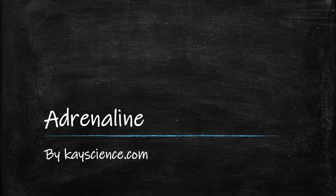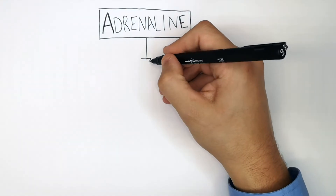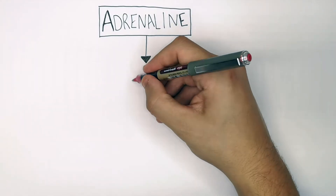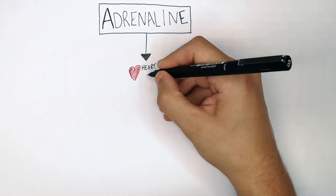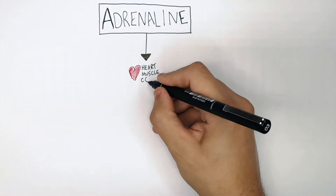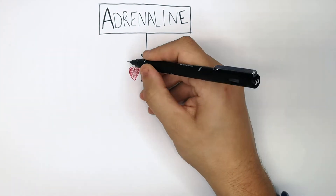The effects of adrenaline, by KScience.com. Adrenaline travels through the blood from the adrenal gland to the heart muscle cells.